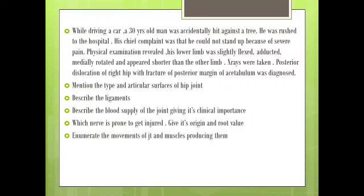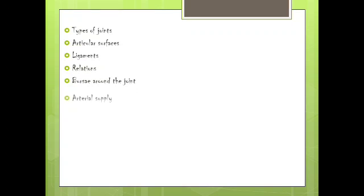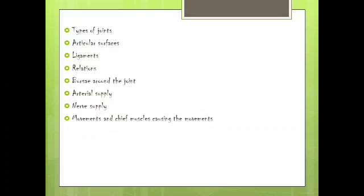Today we'll be discussing hip joint under the following headings: type of joint, articular surfaces, ligaments, relations, bursae around the joint, arterial supply, nerve supply, movements and chief muscles causing the movements, and finally clinical correlation.